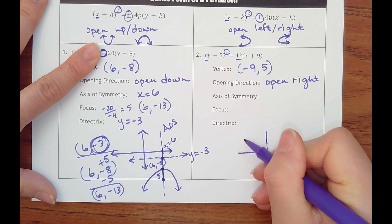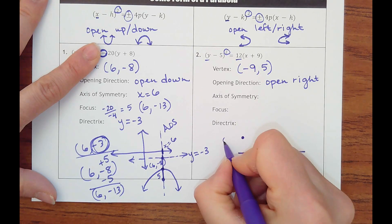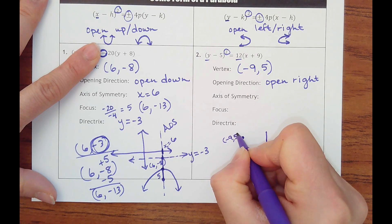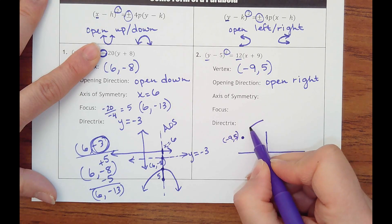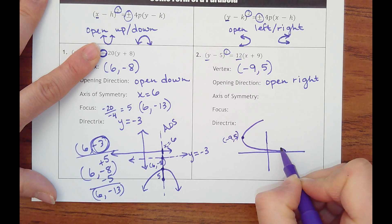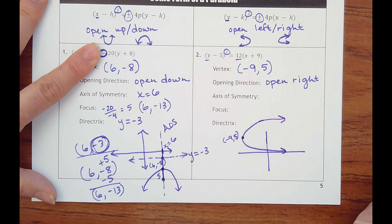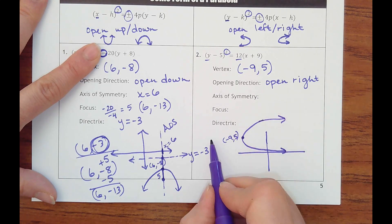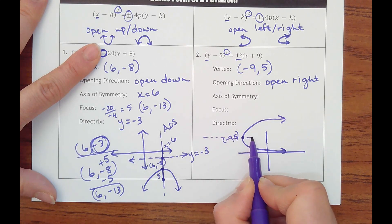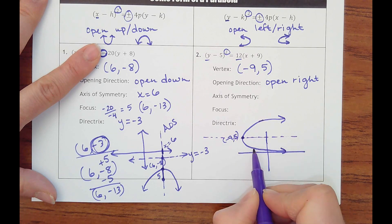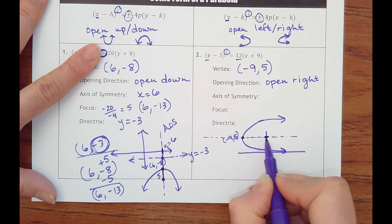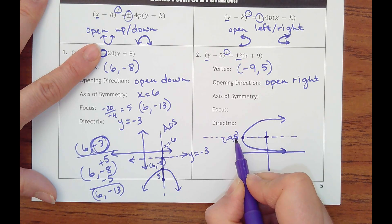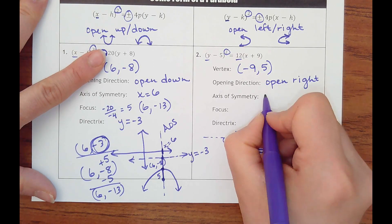Negative 9, 5, let's say that's right here. It's going to open to the right somehow. And axis of symmetry this time is going to be imaginary line running horizontally that cuts it in half, so it's going to be y equals whatever the y value of the vertex is, so it would be y equals 5.